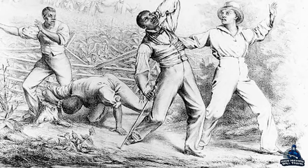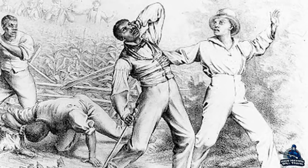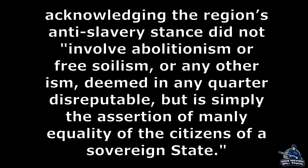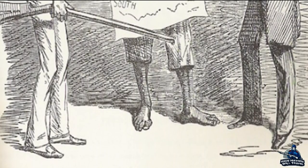West Virginia may have been anti-slavery, but they were not in any sense abolitionists. To be more specific, they were anti-slavery toward the institution in their state. The tax breaks made the wealthy slave owners more wealthy, and that group's political power alienated the western counties and deprived them of representation. As one historian put it, acknowledging the region's anti-slavery stance did not involve abolitionism, or free soilism, or any other ism deemed disreputable, but is simply the assertion of manly equality of the citizens of a sovereign state.